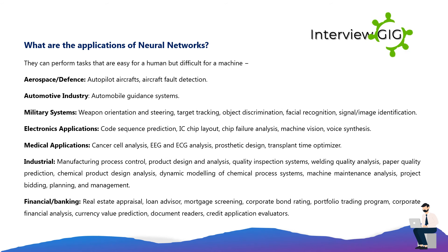What are the applications of neural networks? They can perform tasks that are easy for humans but difficult for machines. In aerospace and defense: autopilot aircraft and fault detection. In the automotive industry: automobile guidance systems. Military systems: weapon orientation and steering, target tracking, object discrimination, facial recognition, signal and image identification. Electronics applications: code sequence prediction, IC chip layout, chip failure analysis, machine vision, and voice synthesis.